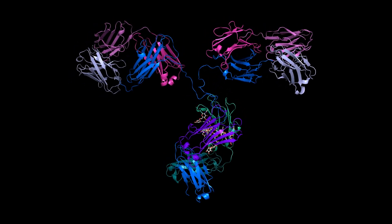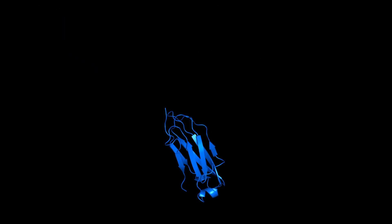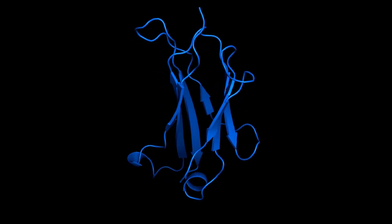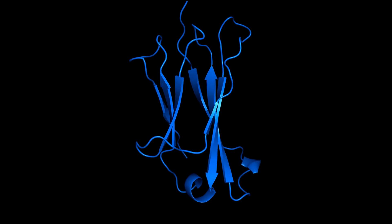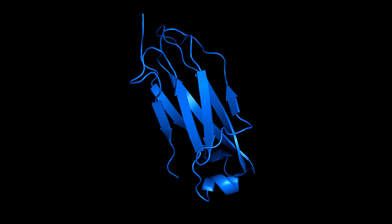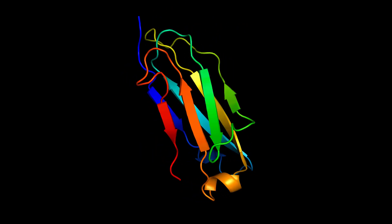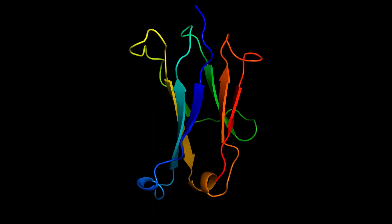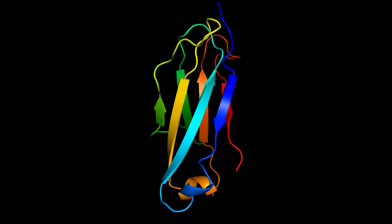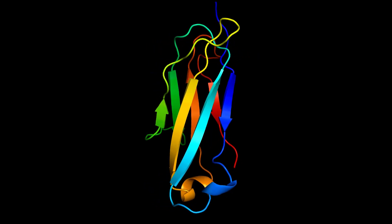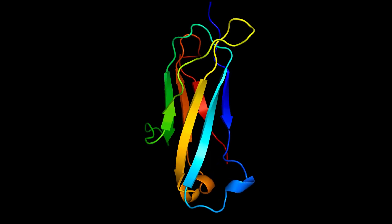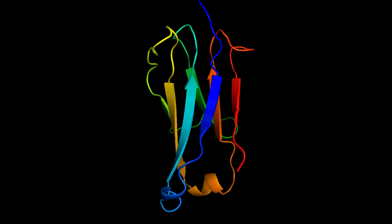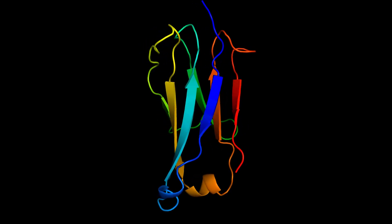The beta sheets twist and tangle, which makes it challenging to really understand the fold when it's a solid color. I'll apply a rainbow color scheme and let's reorient this structure so we can follow the motif from the N-terminus to the C-terminus. Conveniently, with the cartoon representation, we just need to follow the arrows.